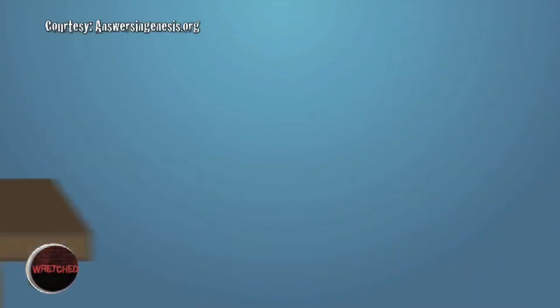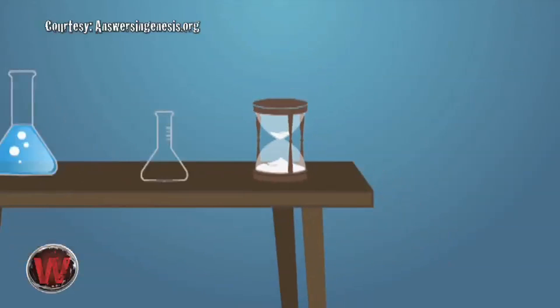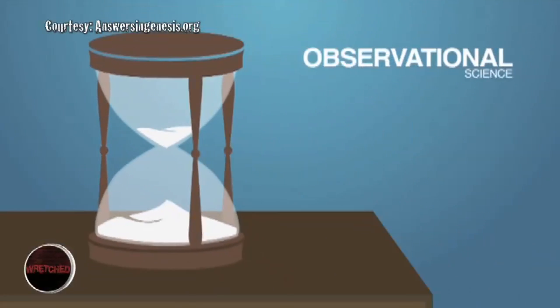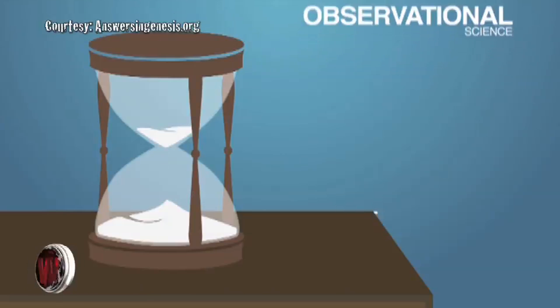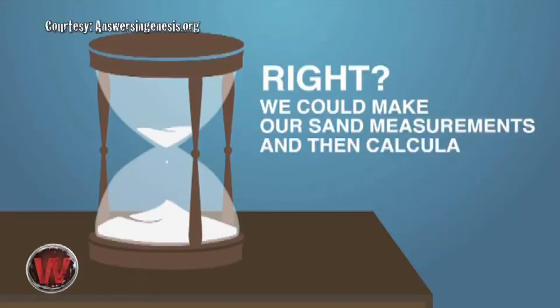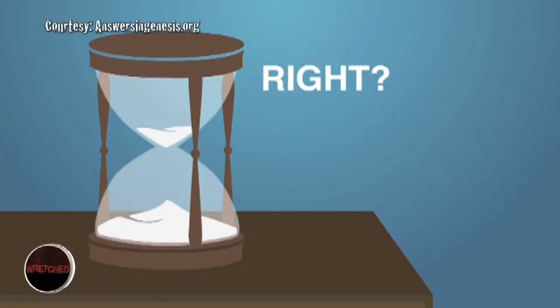Let's simplify here and talk about a typical hourglass. Let's say you walk into a room and you see an hourglass with sand at the top and sand at the bottom, and some sand sprinkling from the top chamber to the bottom. Observational science would allow us to see and measure the sand, and then calculate how long the hourglass has been running. We could make our sand measurements and then calculate when the hourglass was turned over, right?